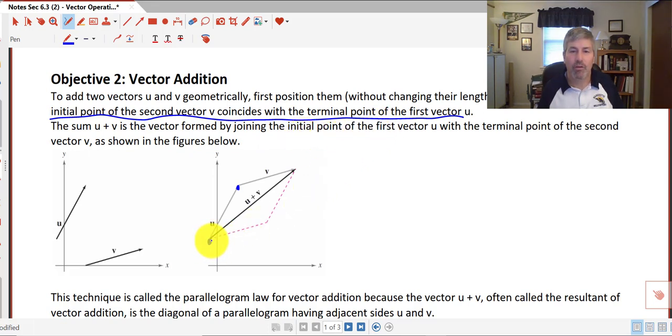So the sum of u plus v is the vector formed by joining the initial point of the first vector, so where we started with u, to the terminal point of the second vector. So kind of that concept of the shortest distance between two points is a straight line, so we'll go from this starting point of u to the ending point of v and create that new vector of u plus v.